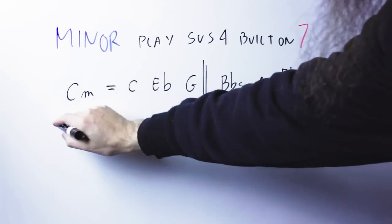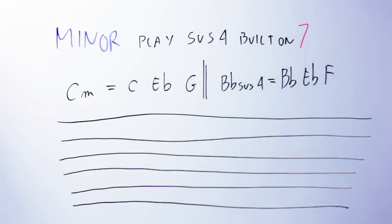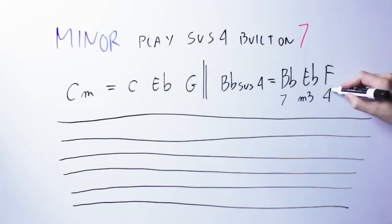Rather than playing the full C chord, I'm just going to play the root. It's easier on the guitar to do it this way, so I'm going to play a C note as my bass note, and I'm going to play a B flat suspended fourth. The B flat suspended fourth will have notes B flat, E flat, and F. Those are respectively the seventh, the minor third, and the fourth of the original minor chord.